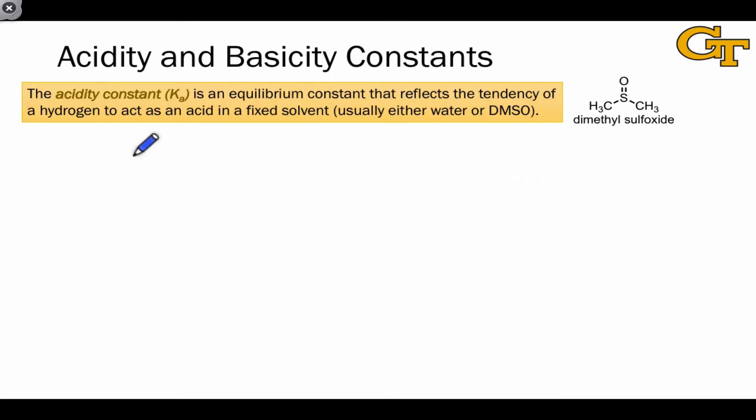The acidity constant, or acid dissociation constant, Ka, is an equilibrium constant that reflects the tendency of a hydrogen to act as an acid in a fixed solvent. This is usually water. All of the Ka's that you've seen previously in introductory chemistry were in water, but because many organic molecules are not soluble in water or very, very weakly acidic with respect to water, you also see dimethyl sulfoxide, or DMSO, being used as the solvent here.